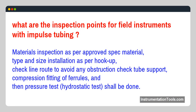What are the inspection points for field instruments with impulse tubing? Materials inspection as per approved spec — material type and size — installation as per hookup, check line route to avoid any obstruction, check tube support, compression fitting of ferrules, and then pressure test and hydrostatic test shall be done.